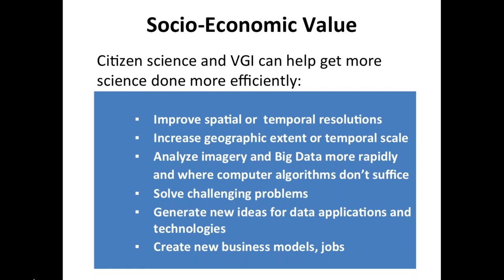When we think about the socioeconomic value of citizen science and volunteer geographic information, we often think of them as ways to improve the spatial or temporal resolution of our data — filling gaps in areas where we can't get traditional data, increasing geographic extent or temporal scale. Citizens can also analyze imagery more rapidly, training algorithms — human in the loop. Now with machine learning, the human eye is often better than the algorithm in detecting patterns. Projects like Foldit, where volunteers manipulated a protein, solved the protein structure leading to an AIDS medication far faster — weeks compared to years for professional scientists. They can help generate new ideas, new data applications, and create new business models or jobs.